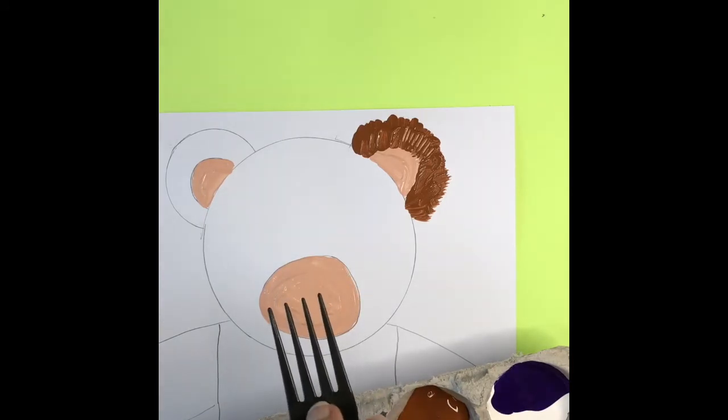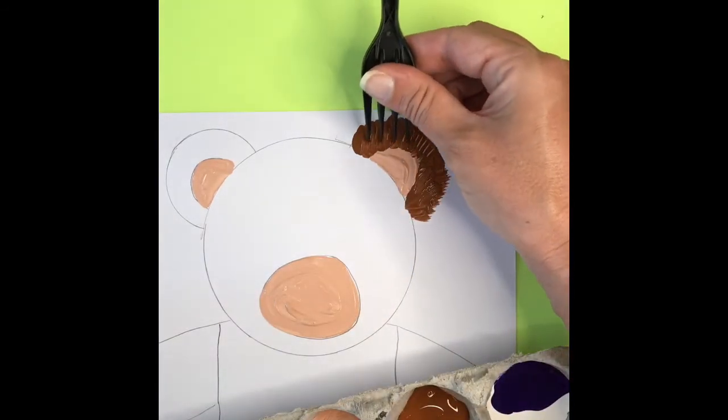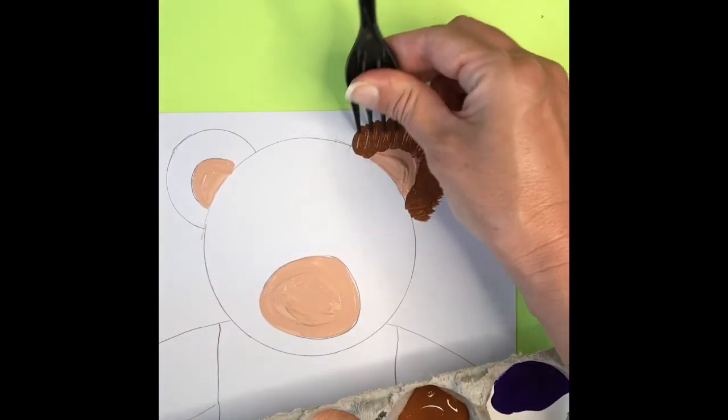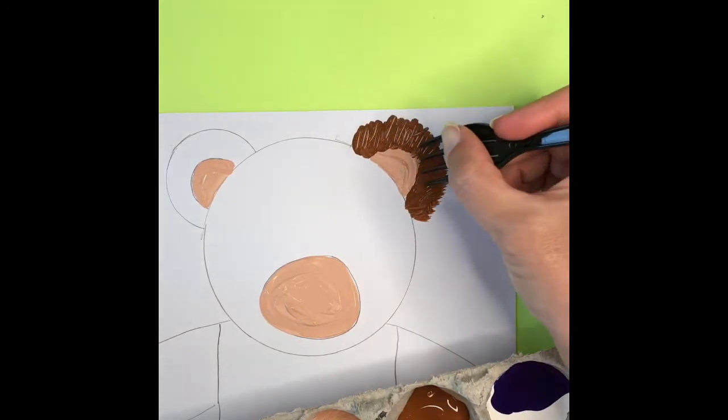Or if you can use a regular fork, make sure you ask a grown up. But this way, we can draw lots of lines at the same time to make his ear look like it has the texture of fur.